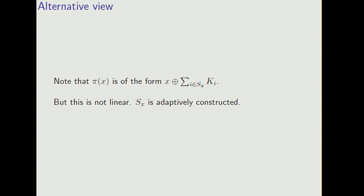An interesting feature of our cipher is that the result is always of the form x, x XORed with some subset of the k's. But note that it's not linear, because this set is chosen non-adaptively in a complicated way.